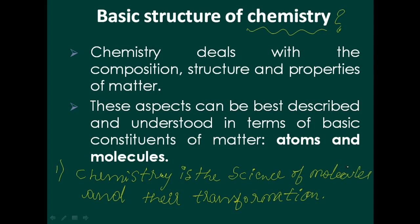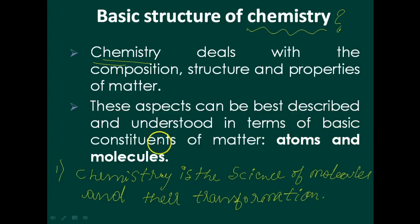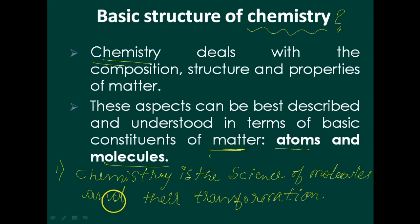In this basic structure of chemistry, the first question is: what do you mean by chemistry? Chemistry is the science of molecules and their transformation. Another definition of chemistry is: chemistry deals with the composition, structure and properties of matter. These aspects can be best described and understood in terms of basic constituents of matter. Please note down: chemistry is the science of molecules and their transformation, and chemistry deals with the composition, structure and properties of matter.